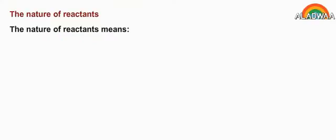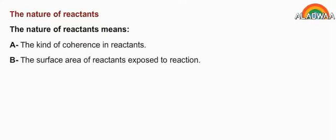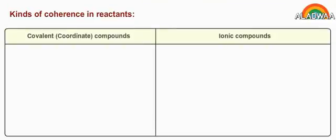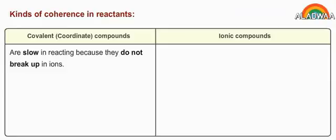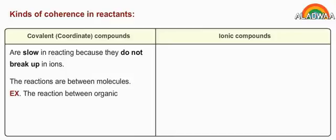The nature of reactants means the kind of coherence in reactants and the surface area of reactants exposed to reaction. Kinds of coherence in reactants: covalent coordinate compounds are slow in reacting because they do not break up into ions. The reactions are between molecules. Example: the reaction between organic compounds.